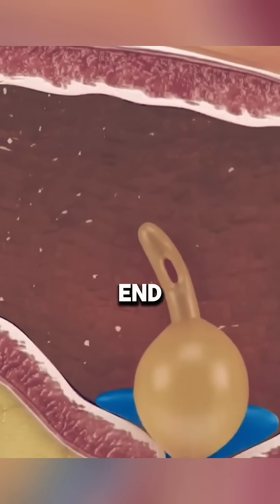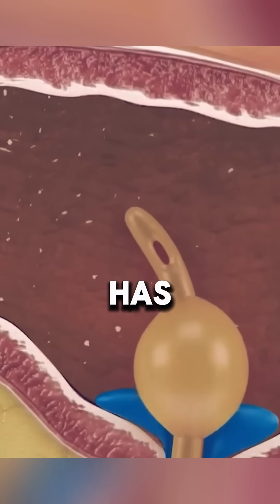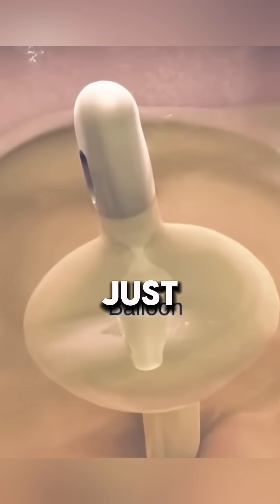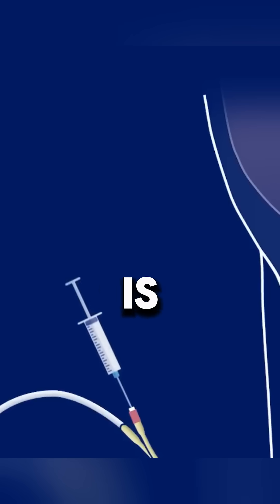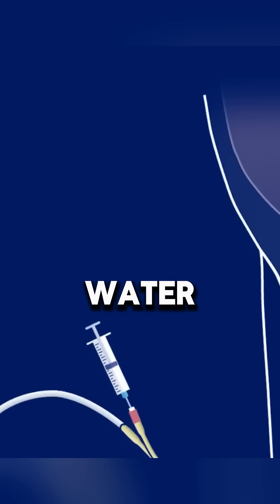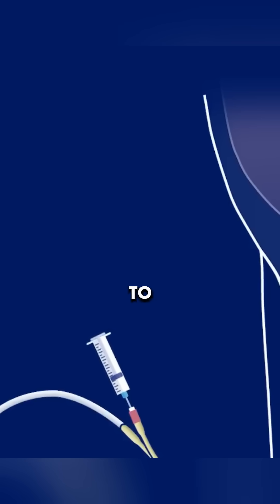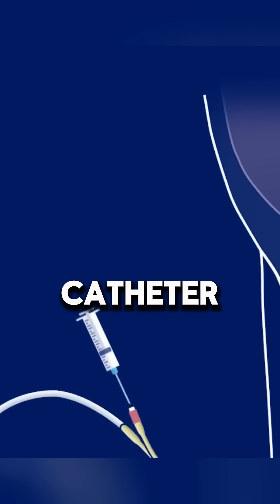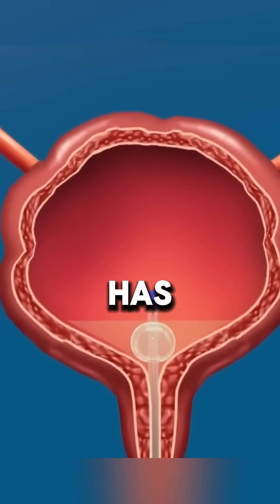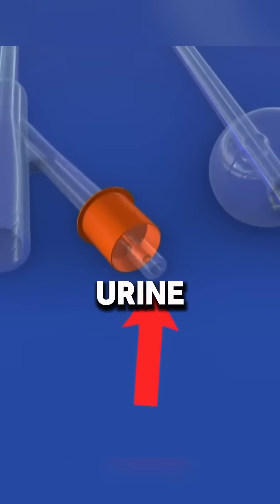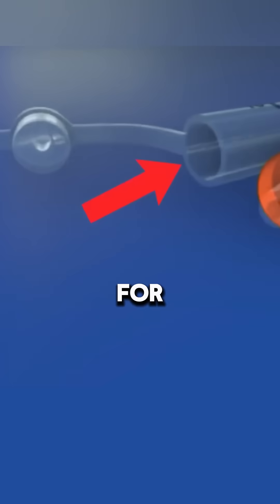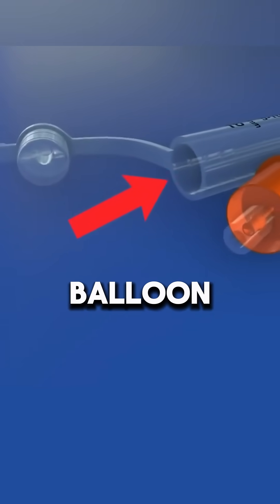One end of the catheter has a hole for urine drainage. Just below it is a balloon that is inflated with water once inserted to keep the catheter in place. The other end has two ports: one for attaching a urine bag that collects drained urine, and another for inflating the balloon with water.